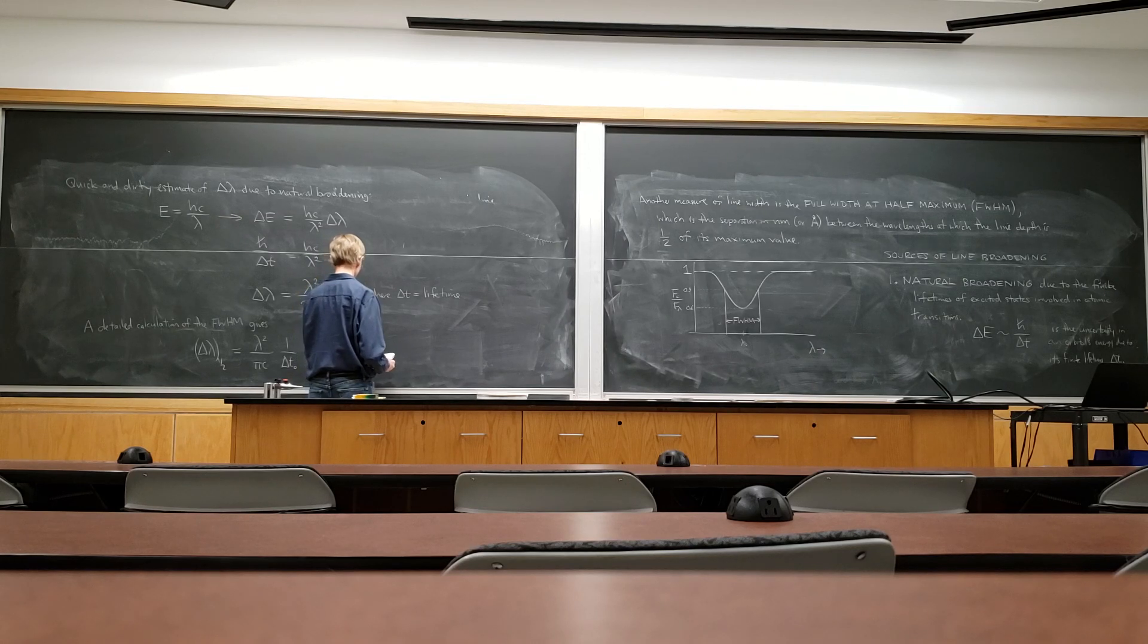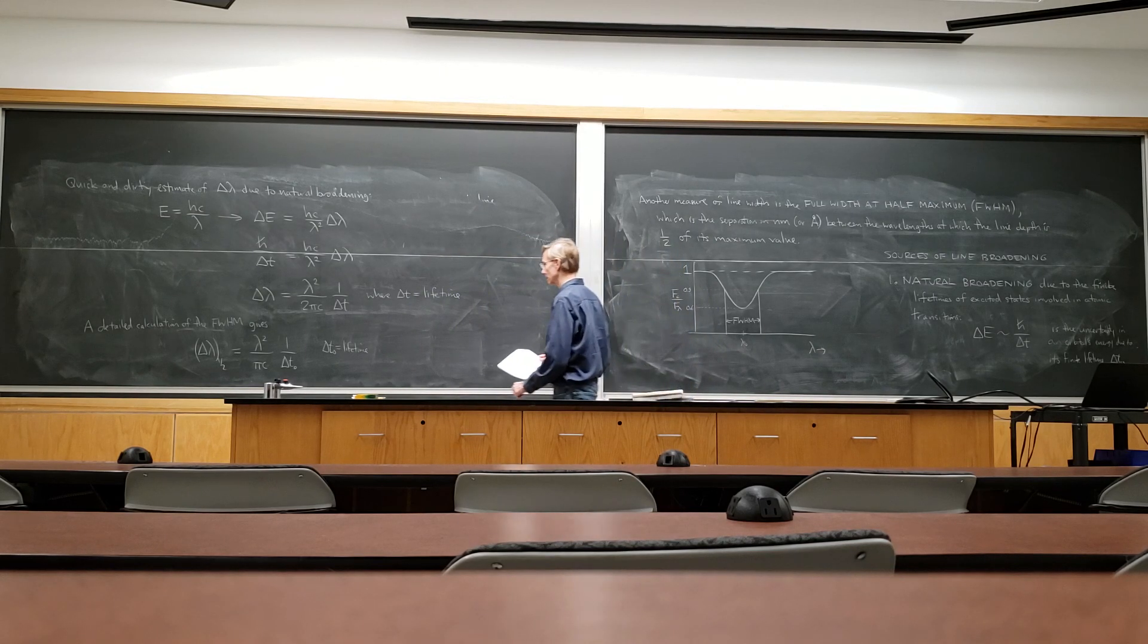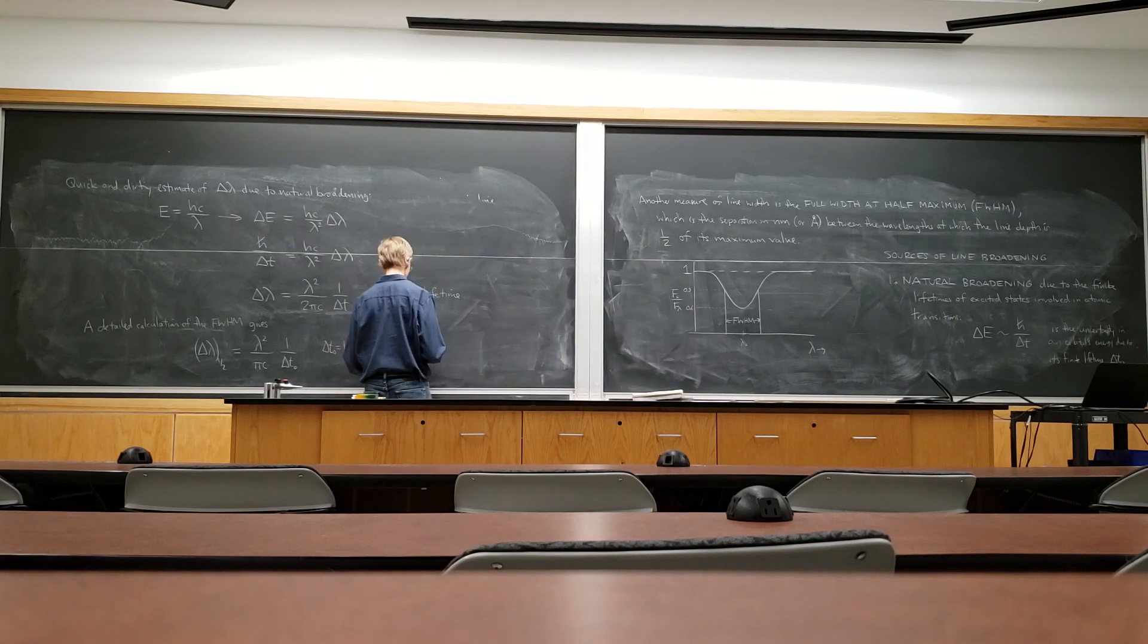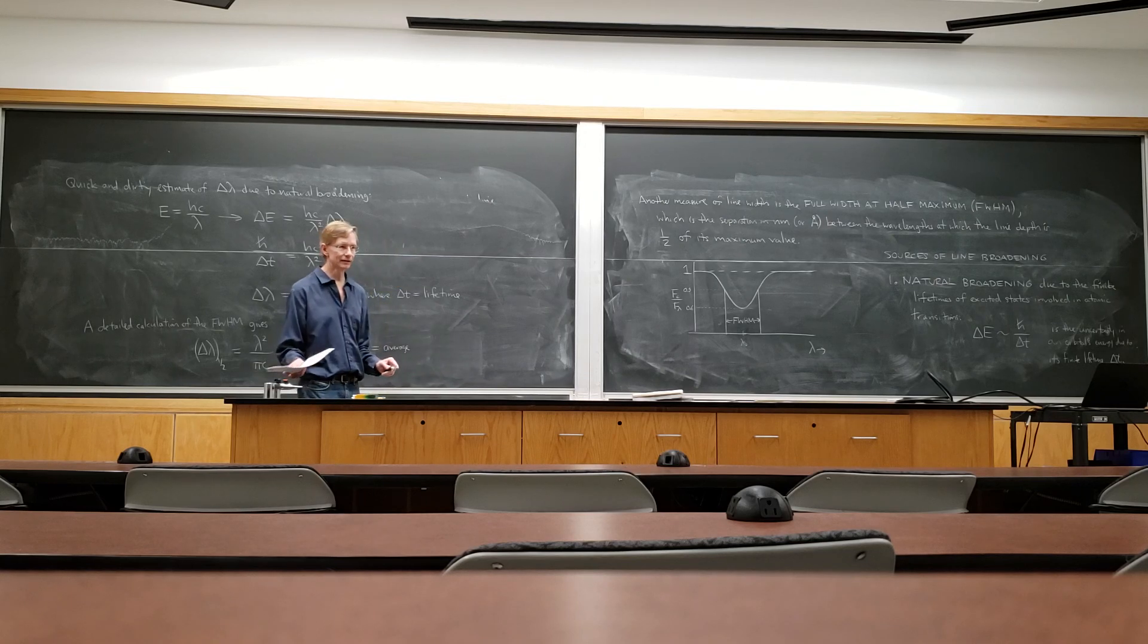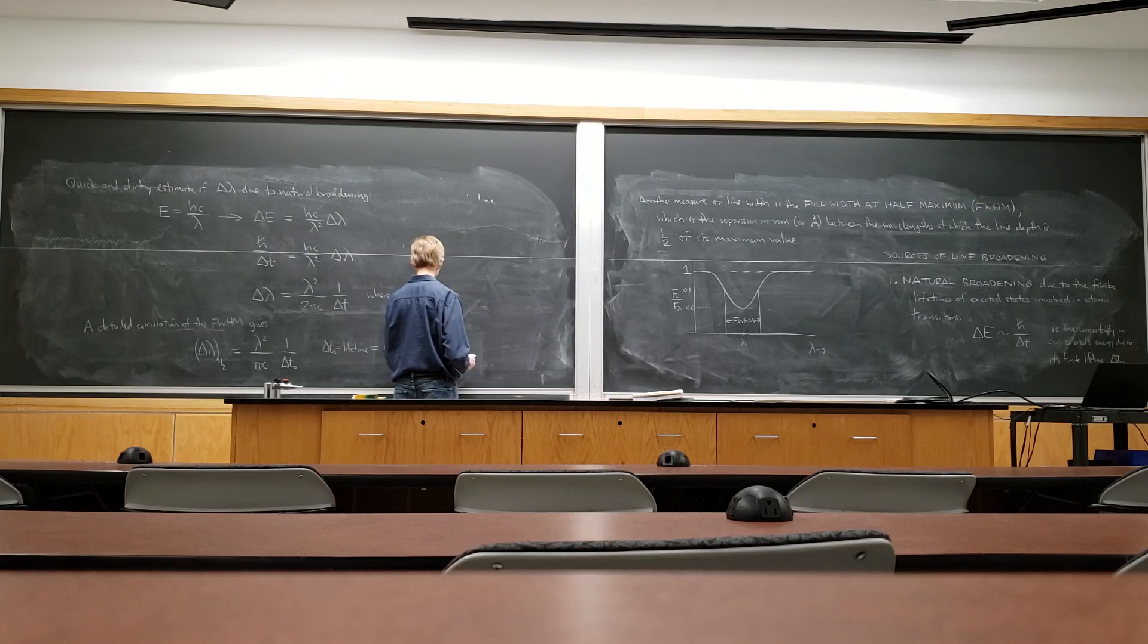So here we're using delta t0 for the lifetime. And by that we mean the average time required for the transition to occur, because it's a quantum process, so it happens randomly, but you get an average.